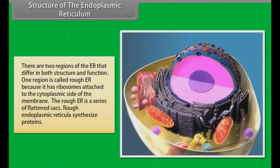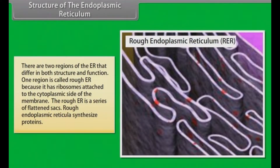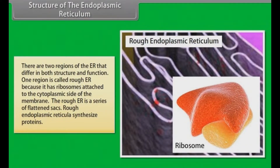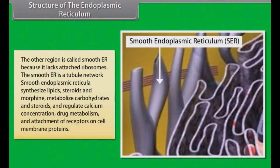There are two regions of the ER that differ in both structure and function. One region is called rough ER because it has ribosomes attached to the cytoplasmic side of the membrane. The rough ER is a series of flattened sacs; rough endoplasmic reticulum synthesizes proteins. The other region is called smooth ER because it lacks attached ribosomes. The smooth ER is a tubule network. Smooth endoplasmic reticulum synthesizes lipids, steroids and morphine, metabolizes carbohydrates and steroids, and regulates calcium concentration, drug metabolism and attachment of receptors on cell membrane proteins.